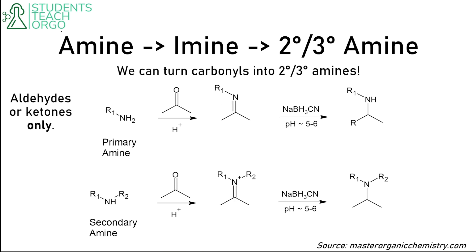So how do we do this? We're going to be using a reagent known as sodium cyanoborohydride. We want to do this ideally at a pH of 5 to 6. This is based on the mechanism for sodium cyanoborohydride, and it's going to function in the same way that sodium borohydride does when you perform your reduction reactions.